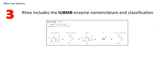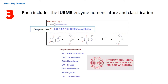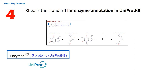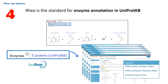RIA includes the IUBMB enzyme nomenclature and classification, maintained by the International Union of Biochemistry and Molecular Biology. The protein knowledge base UniProt KB uses RIA as the standard for annotation, representation and searchability of enzyme-catalyzed reactions. When available, RIA provides a link to related proteins in UniProt KB. For example, this reaction is linked to five UniProt entries, which describe two different proteins from three different species. Note that making these links is an ongoing and collaborative process between RIA and UniProt curators.